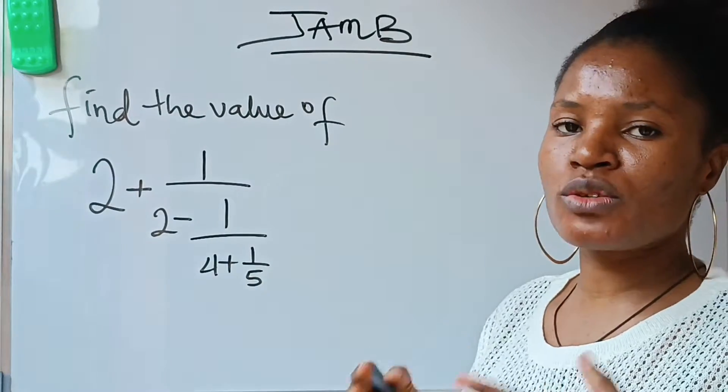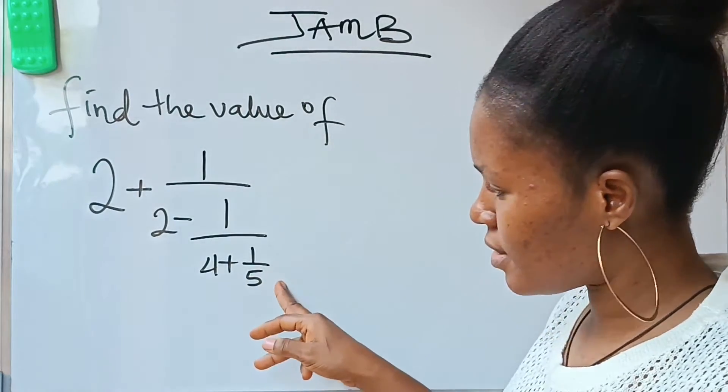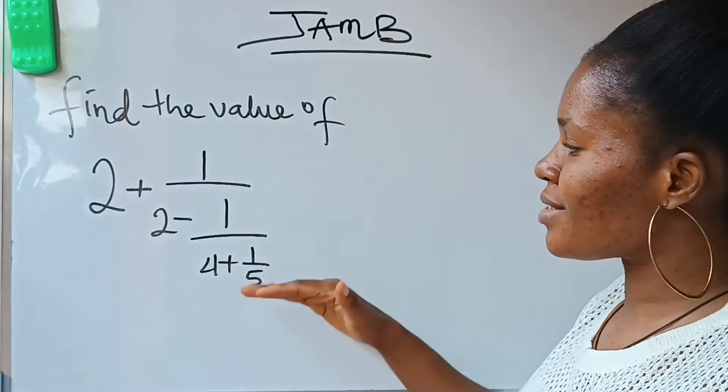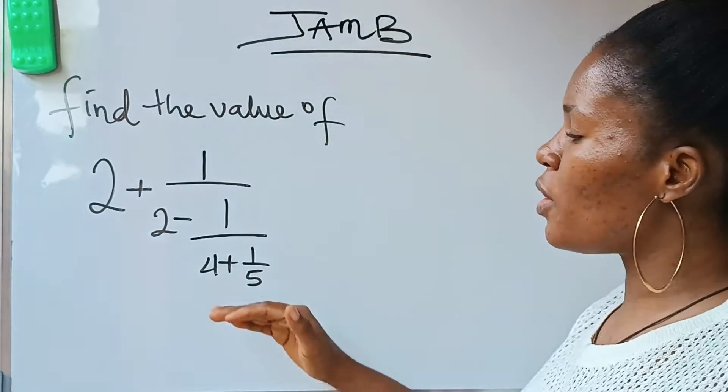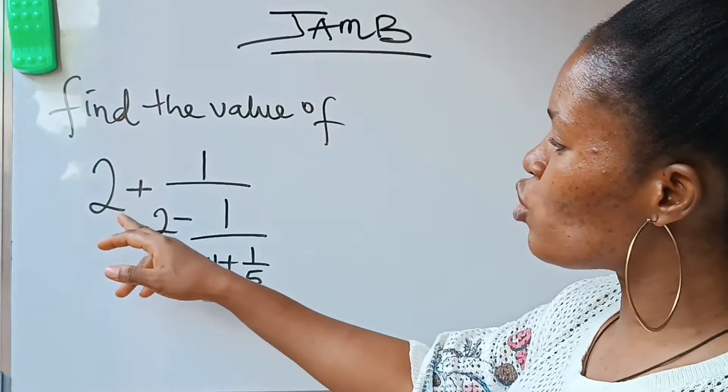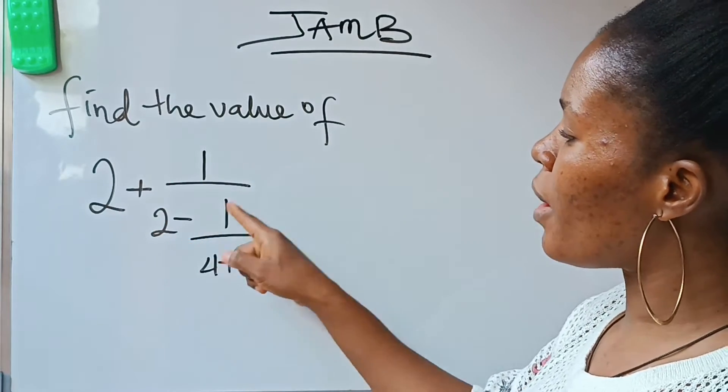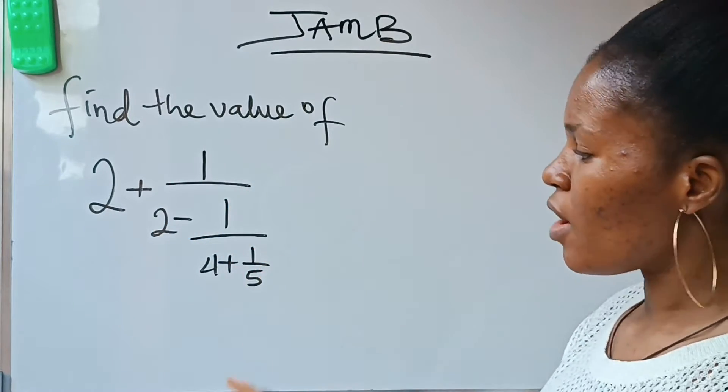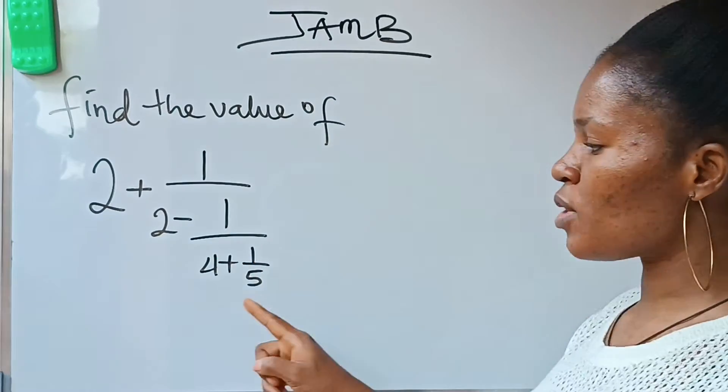So we look at this question now. You are told to solve 2 plus 1 over 2 minus 1 over 4 plus 1 over 5. First of all, you are going to solve this one. This one is the same as 4 over 1.